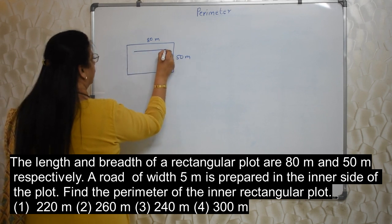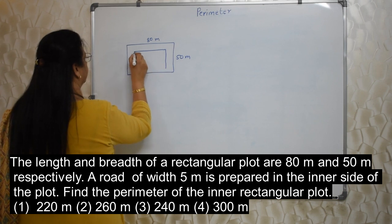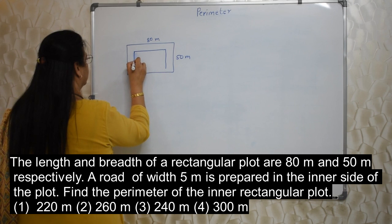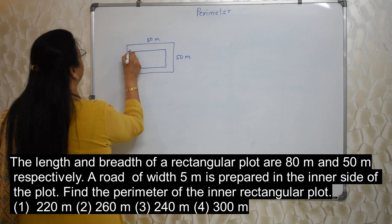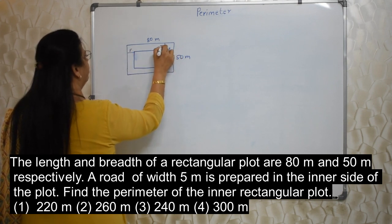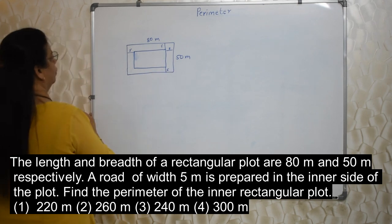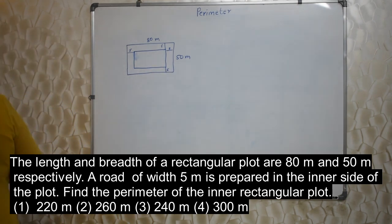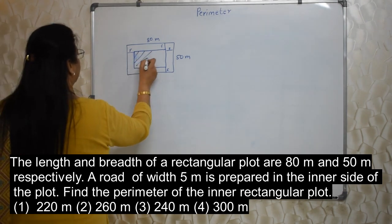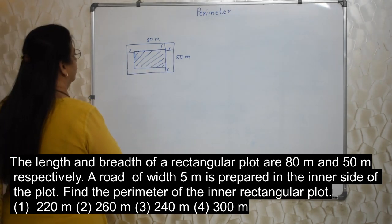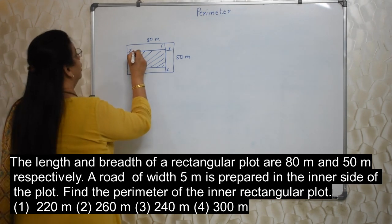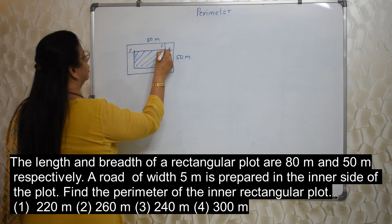Inside, they want the road of 5 metre. What does it mean? This is 5 metre. This is 5 metre. This is 5 metre. Everywhere 5 metre. Right? This is 5 metre. So, they want us to find out the perimeter of the inner, means this rectangle. How to find out the length of the inner, is up to this, okay?